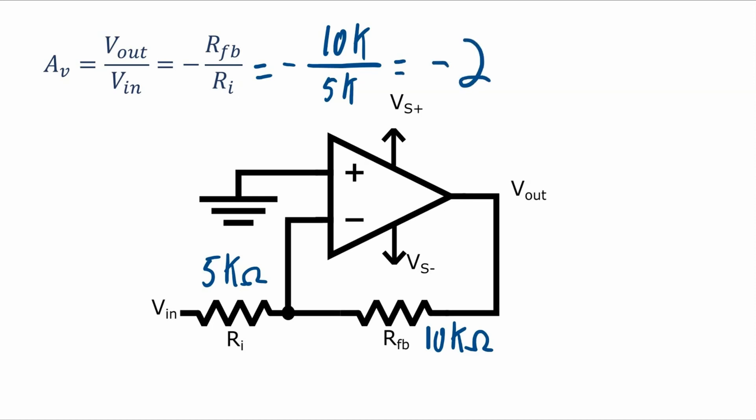So that means if you have a 10 volt peak signal being applied here, you will get a 20 volt peak signal at the output that's inverted from the input.